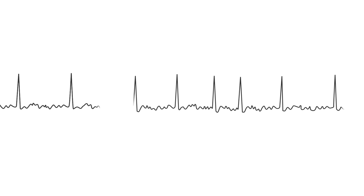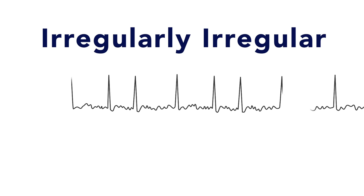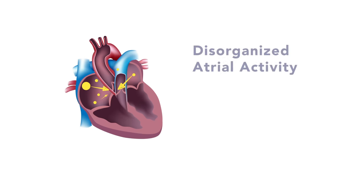Atrial fibrillation is often described as having an irregularly irregular rhythm. It is caused by disorganized atrial activity and contraction, leading to atypical electrical transmission to the AV node and ventricles. This is what causes the irregularly irregular rhythm.